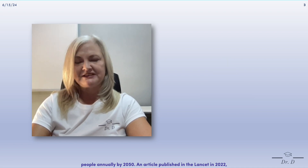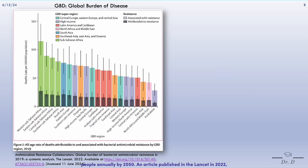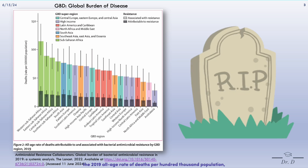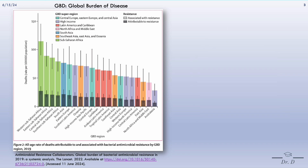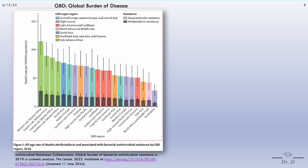An article published in The Lancet in 2022 presents comprehensive estimates of this burden. This graph shows the 2019 all-age rate of deaths per 100,000 population attributable to and associated with bacterial antimicrobial resistance by GBD region. Access the article online for a more in-depth understanding.